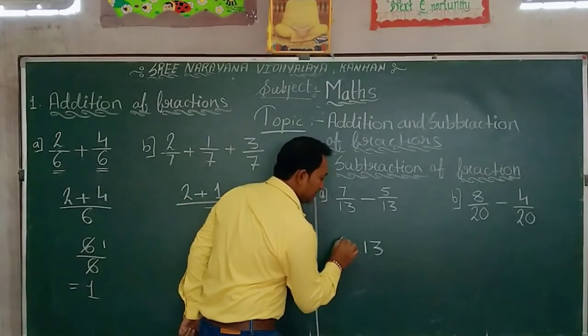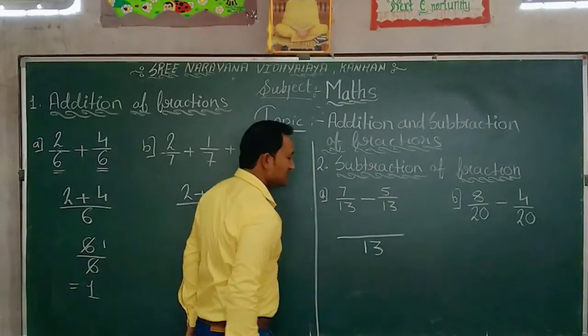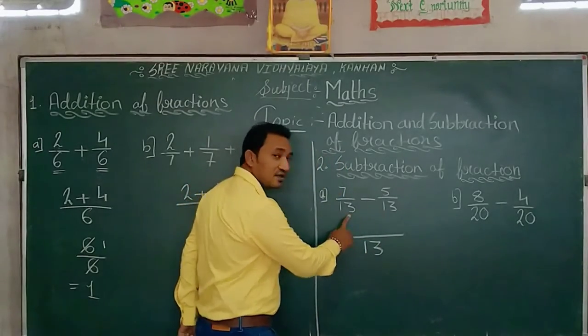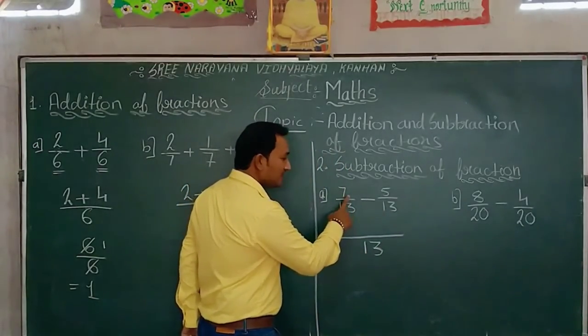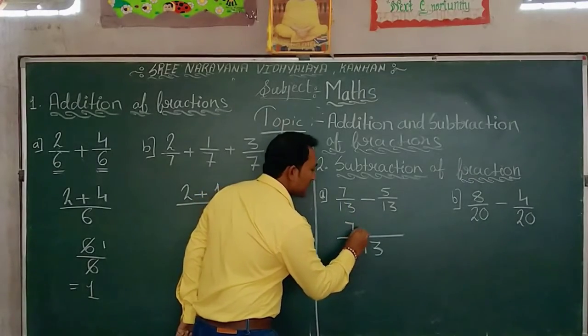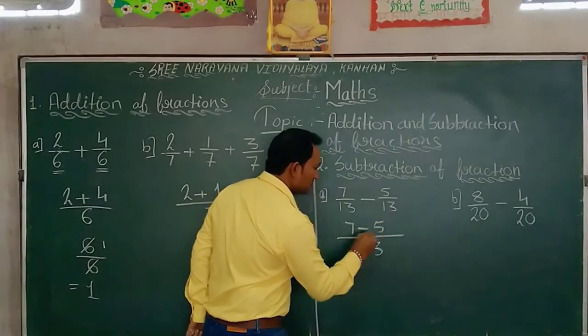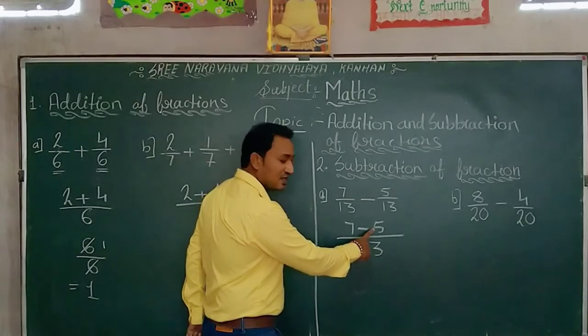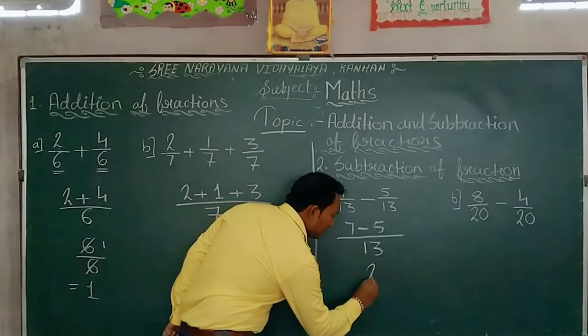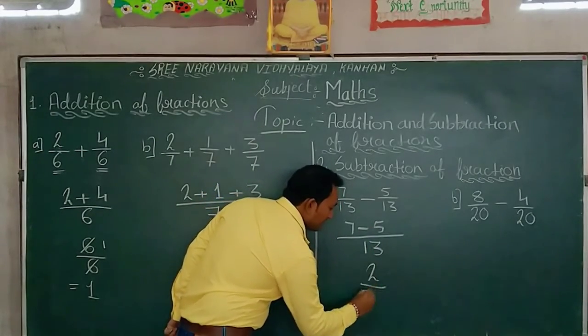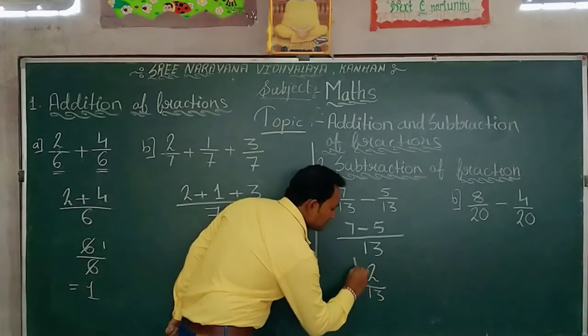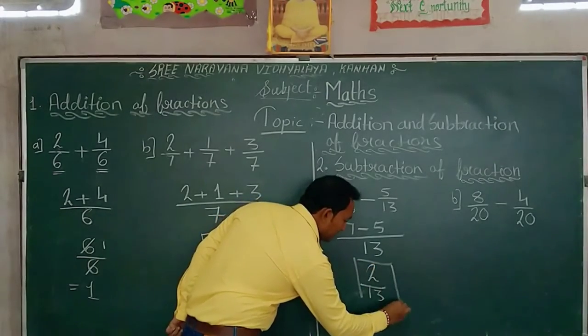13 is written as it is because the denominators are equal. And numerators will be subtracted like this. 7 minus 5. Answer is 2. And 13 will return as it is. Means our answer is 2 by 13.